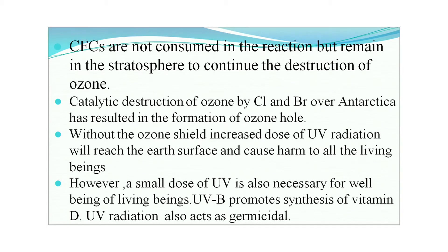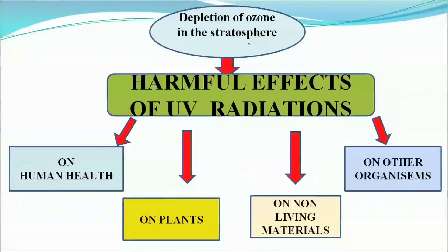Catalytic destruction of ozone by chloride, carbon, and bromine over the Antarctic has resulted in formation of the ozone hole. Without the ozone shield, increased doses of UV radiation will reach the Earth's surface and cause harm to all living beings. However, a small dose of UV is also necessary for well-being — UV-B promotes synthesis of vitamin D, and UV radiation also acts as a germicidal.